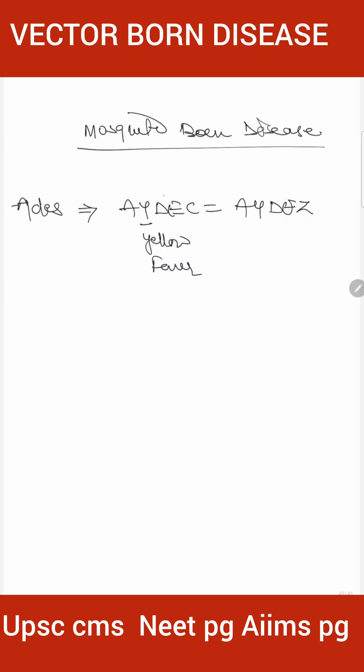D-E means dengue fever, and C means chikungunya. So chikungunya is also transmitted by Aedes. Now Z means Zika virus.